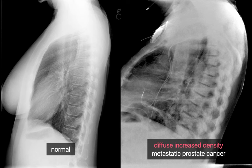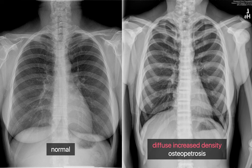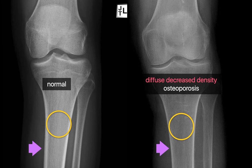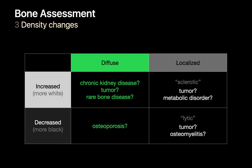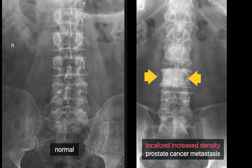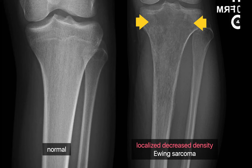Here's an example of diffusely increased bone density in the setting of metastatic prostate cancer to bone. Here's an example of diffusely increased bone density in the setting of a rare bone disease known as osteopetrosis. And here's an example of diffusely decreased bone density in the setting of osteoporosis — notice how the cortical bone appears thinner too. When the density change is localized, always remember to consider tumor regardless if you observe localized density increase or decrease. Here's an example of localized increased bone density in the setting of metastatic prostate cancer to the lumbar spine, and here's an example of localized decreased bone density in the setting of a primary Ewing sarcoma in the tibia.